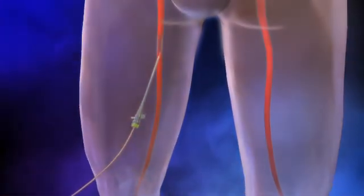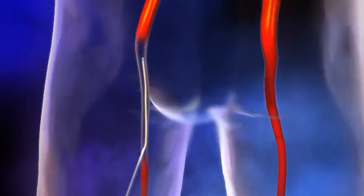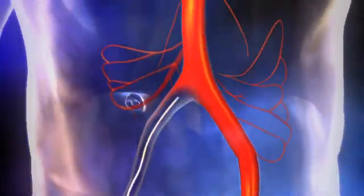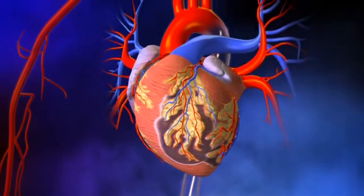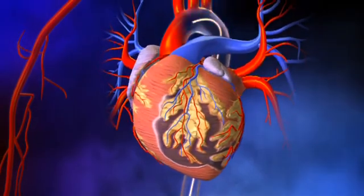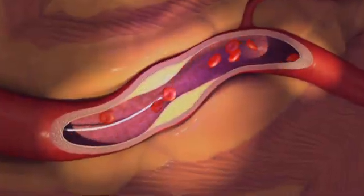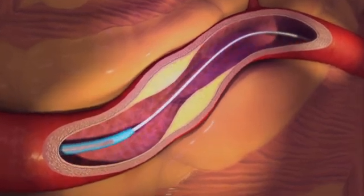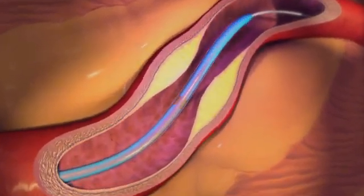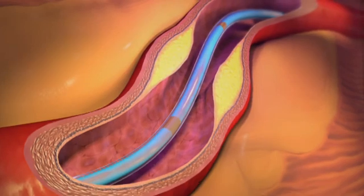During this procedure, a small cut is made in the upper thigh or possibly the arm. Then a guide wire is inserted into the artery and threaded to the site of the blockage. A catheter, or small flexible tube with a deflated balloon, is moved along the guide wire to the blockage.